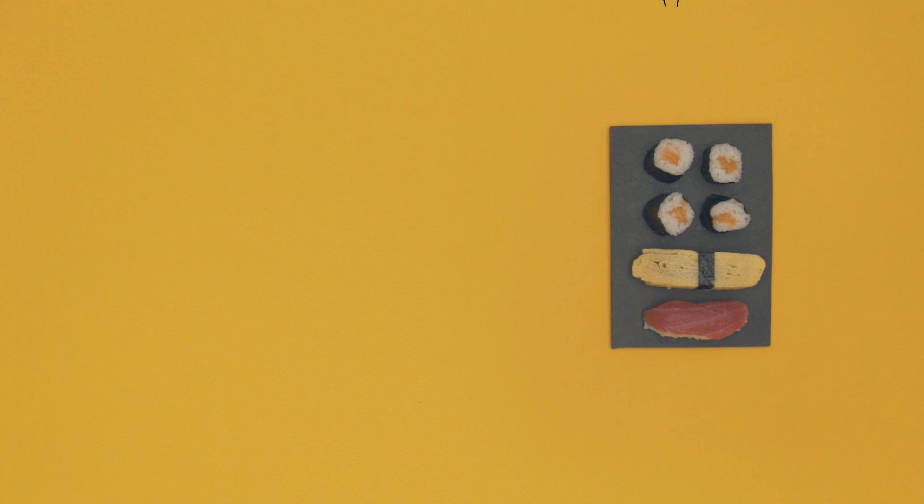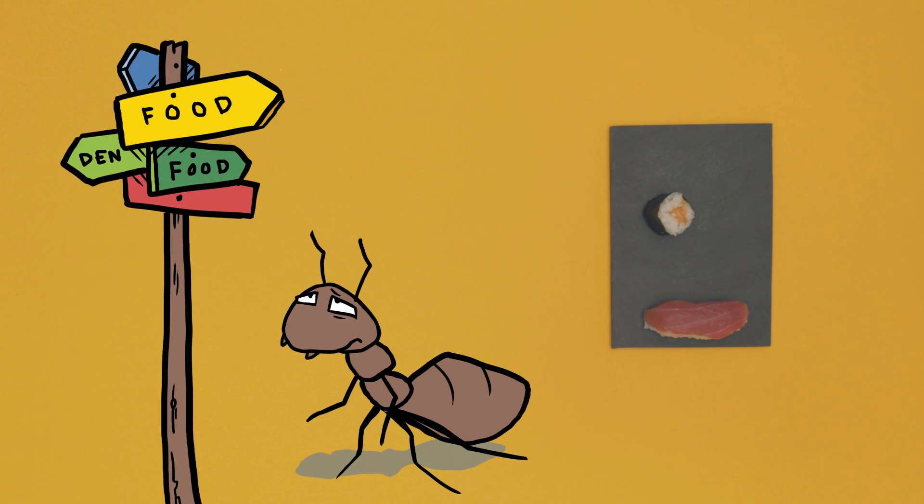An ant that has discovered a short and efficient route will walk to and from the food source more frequently than another that walks a longer route. The colony notices this by the pheromones emitted by the faster ant, and so can identify the quickest route without having to try each one.